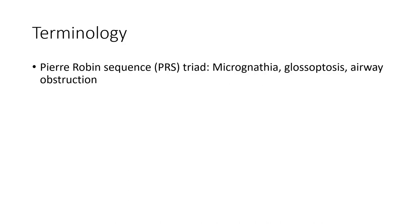Terminology. Pierre Robin Sequence triad includes micrognathia, glossoptosis, and airway obstruction.